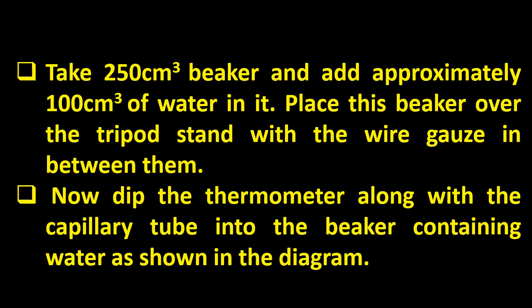Take a beaker, preferably of 250 ml capacity, and add water in it. Place this beaker over the tripod stand with the wire gauge in between them. We use a tripod stand because we have to dip the thermometer in the beaker. We put the beaker at some height so that it can accommodate the thermometer. Wire gauge, being made of iron, can equalize the heat. Then dip the thermometer along with the capillary tube into the beaker containing water.